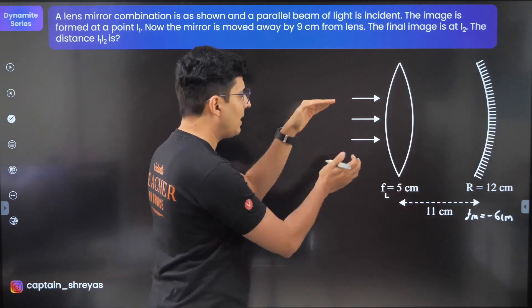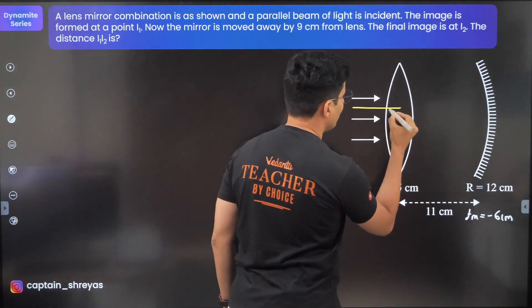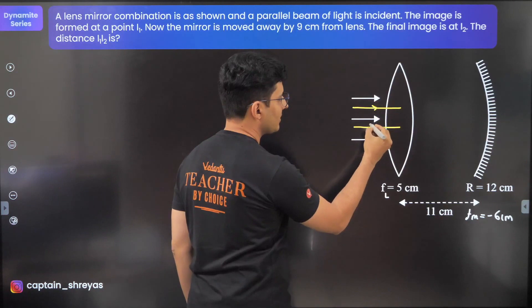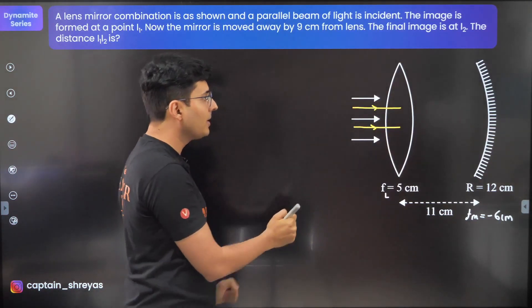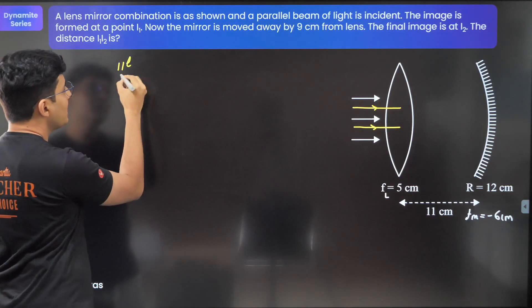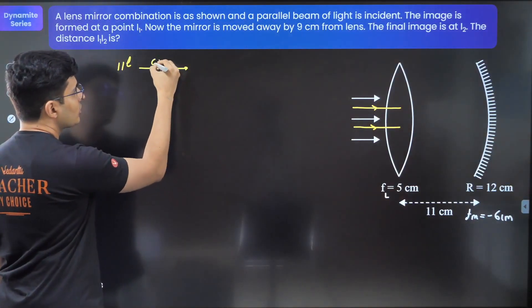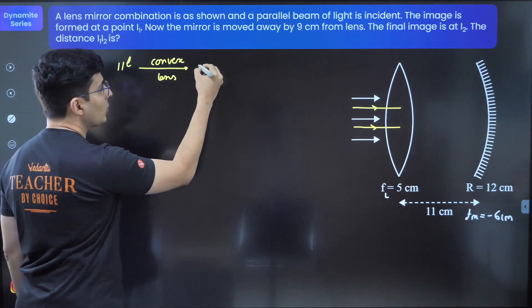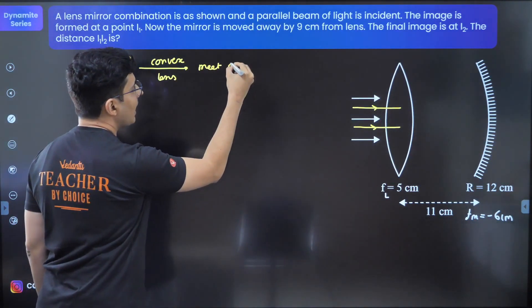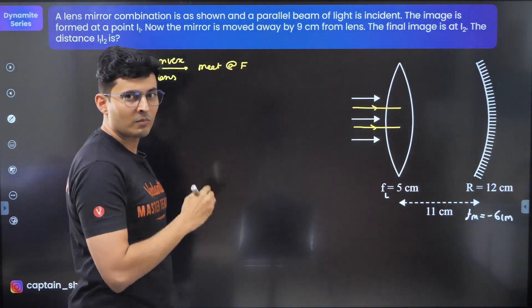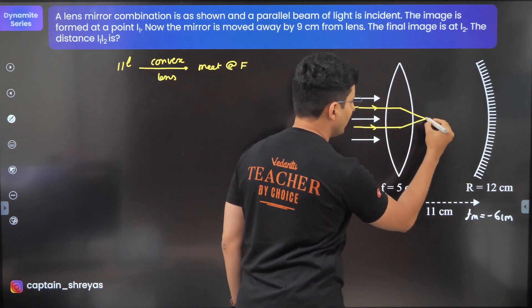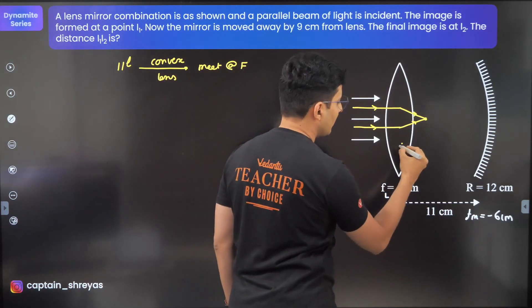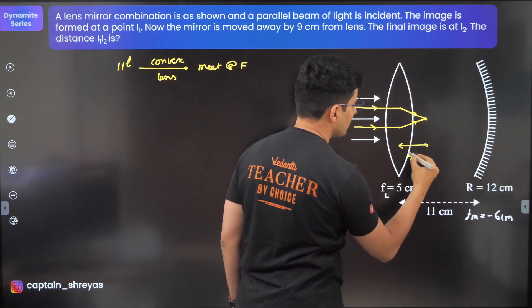Now imagine the parallel beam of light going like this. A parallel beam of light which goes through a convex lens will obviously meet at its focus. The focal point is somewhere here, this is what happens after refraction, and this distance is just 5 centimeters.